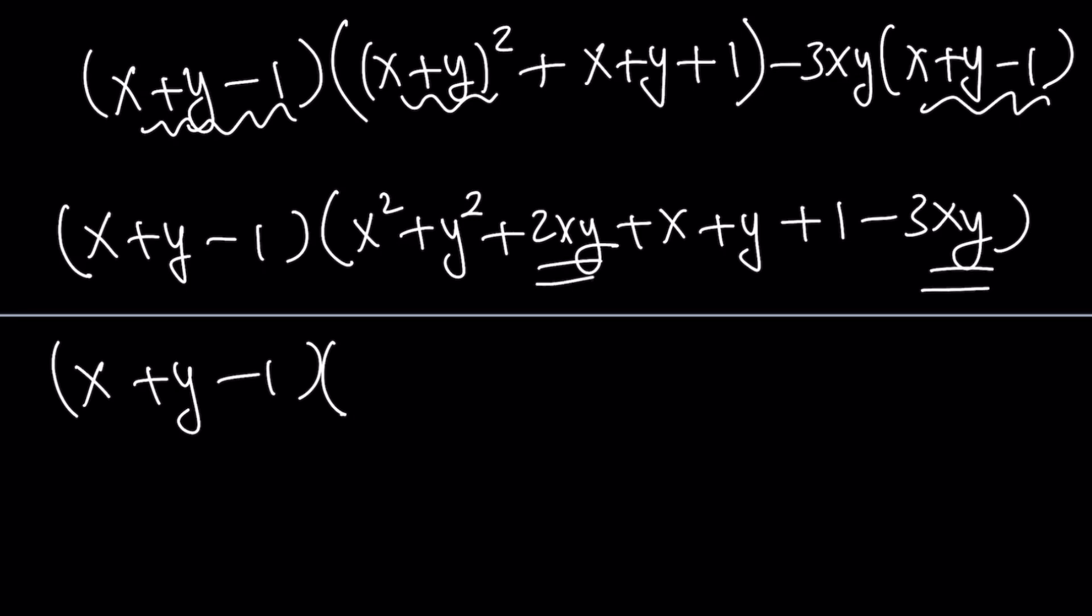They like each other. So we can put them together like x squared plus y squared minus xy plus x plus y plus 1. The whole thing is equal to 0.